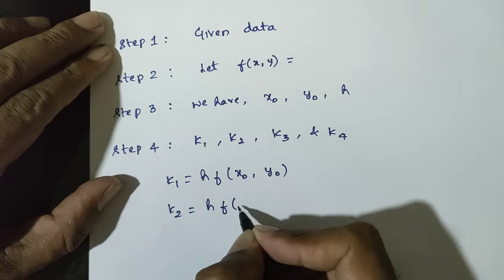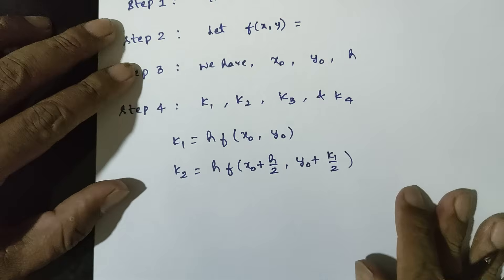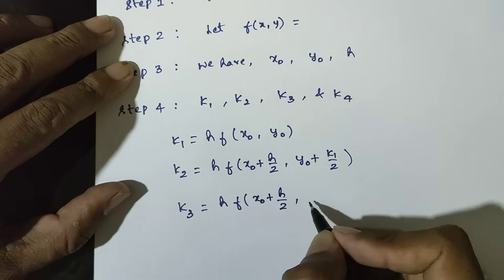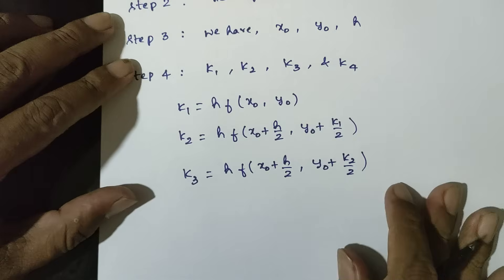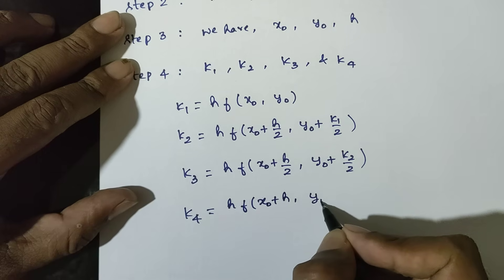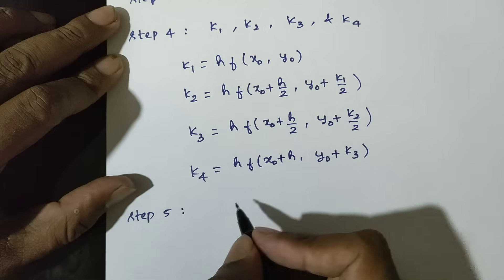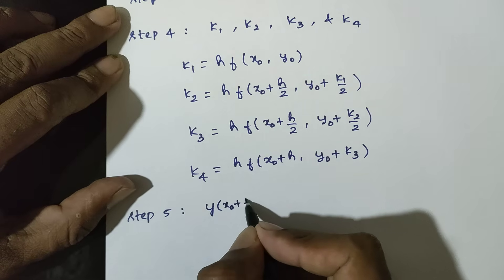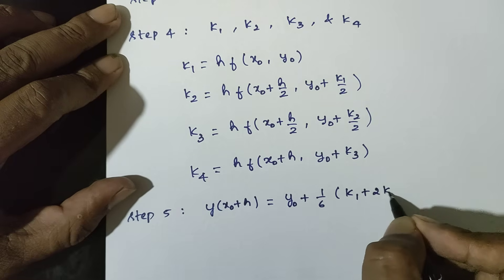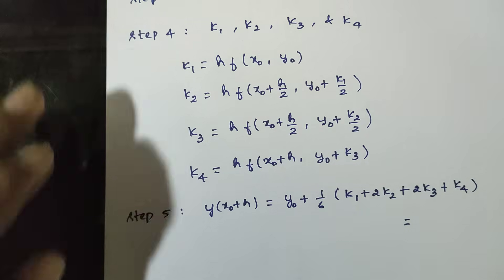K2 formula: h into f of x0 plus h by 2, y0 plus k1 by 2. K3 formula: h into f of x0 plus h by 2, y0 plus k2 by 2. K4 formula: h into f of x0 plus h, y0 plus k3. Final step: y(x0 + h) is equal to y0 plus 1 by 6 into (k1 plus 2k2 plus 2k3 plus k4). That's all. Thank you.